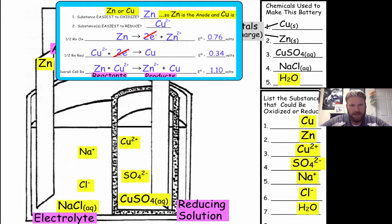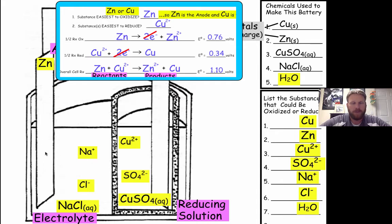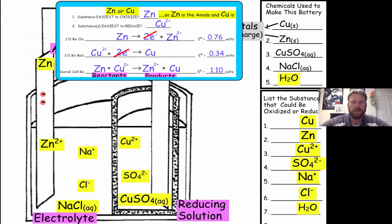Now we're going to demonstrate the process of oxidation and reduction. Oxidation occurs at the anode, and zinc is being oxidized to zinc ions. We represent that over here on the anode — write it just as in the oxidation half reaction. A zinc atom loses two electrons and becomes Zn²⁺. We label that 'ox' for oxidation. Because the metal atoms give up electrons and become ions, the mass of the anode will decrease.